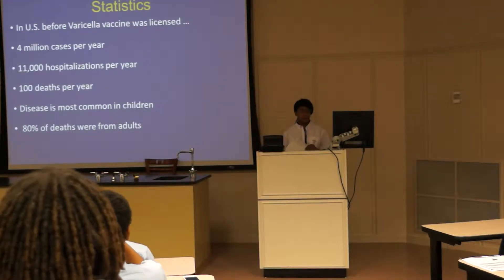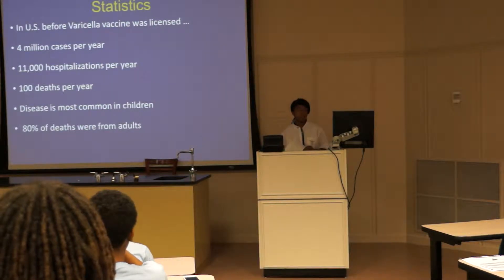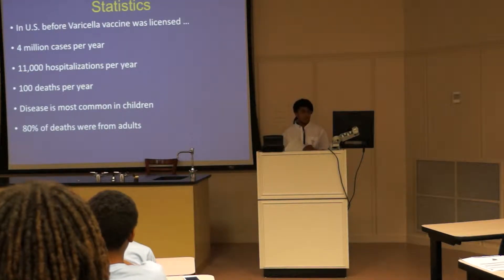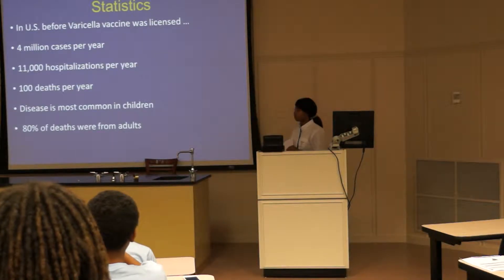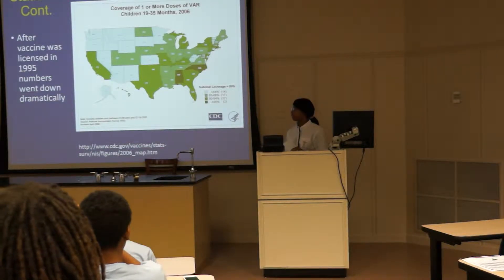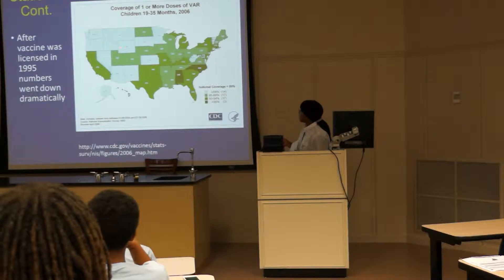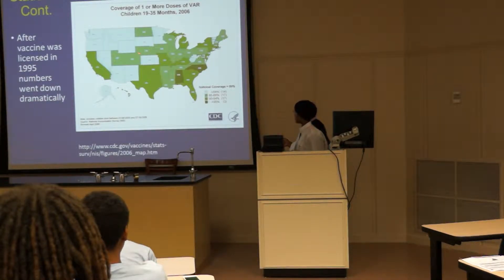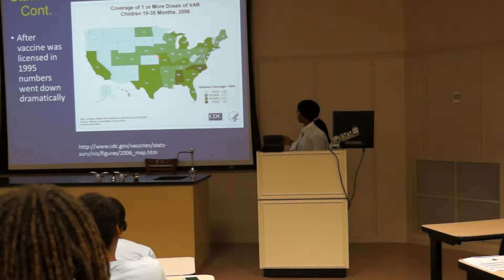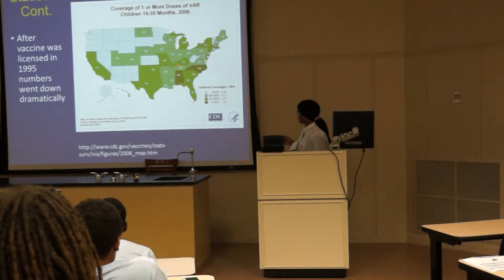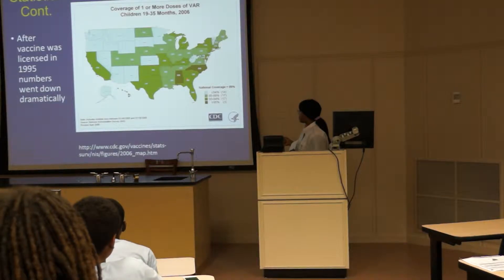Statistics. In the U.S., before the Varicella vaccine was licensed in 1995, there were 4 million cases per year, 11,000 hospitalizations, and 100 deaths. The disease is most common in children. However, 80% of the deaths were in adults. After the vaccine was licensed in 1995, numbers went down significantly. Here is a chart of the United States and the coverage of one or more doses of Varicella in children aged 19 to 35 months in 2006, broken down by percentage ranges across states.